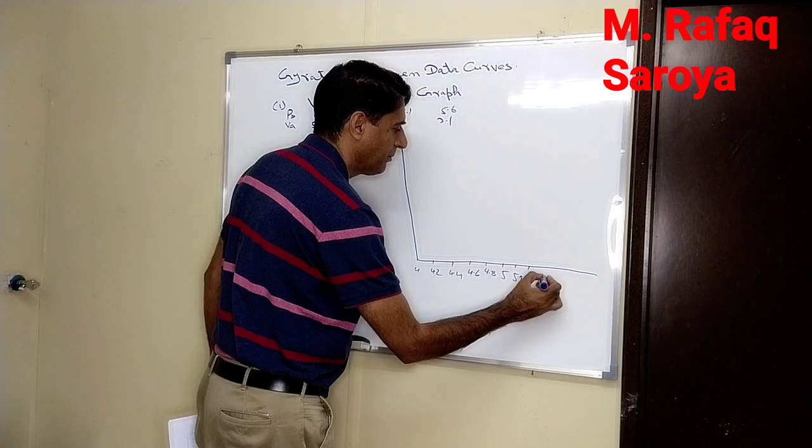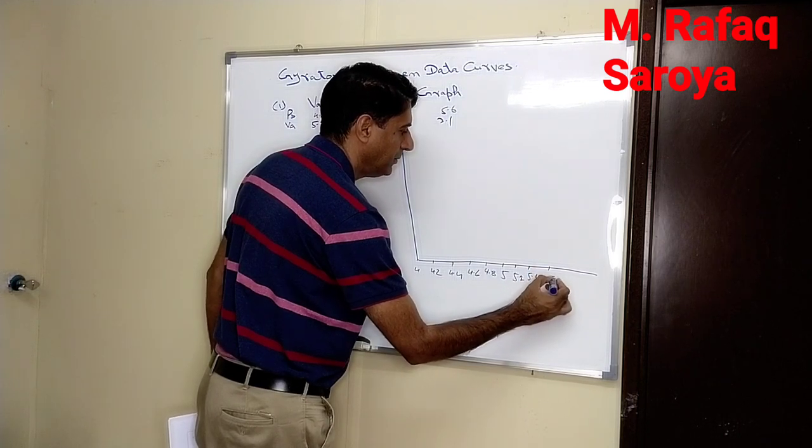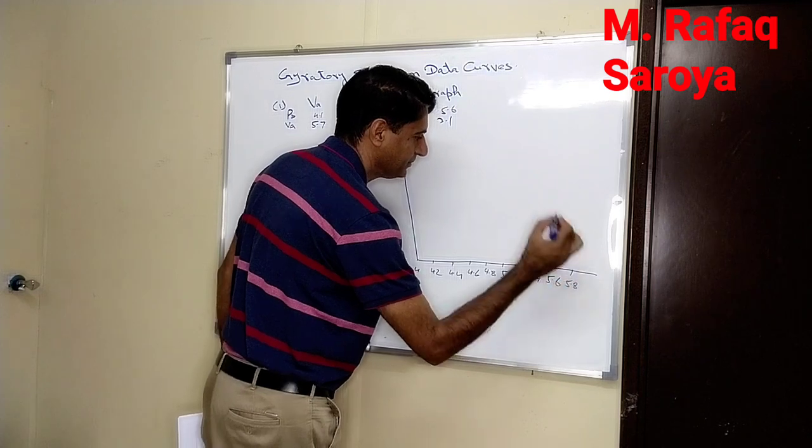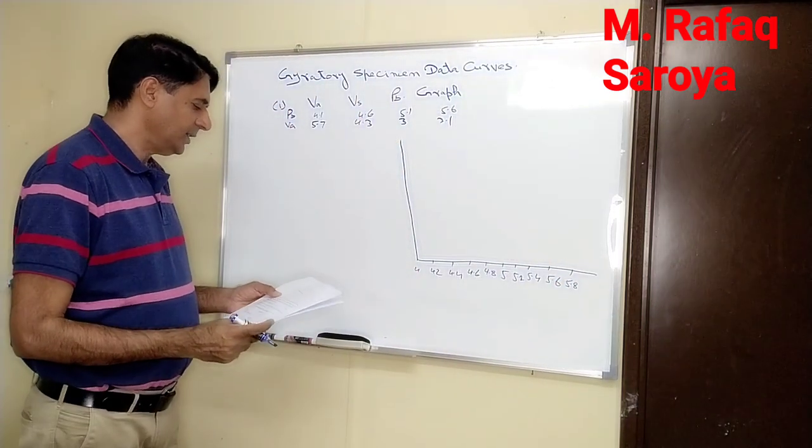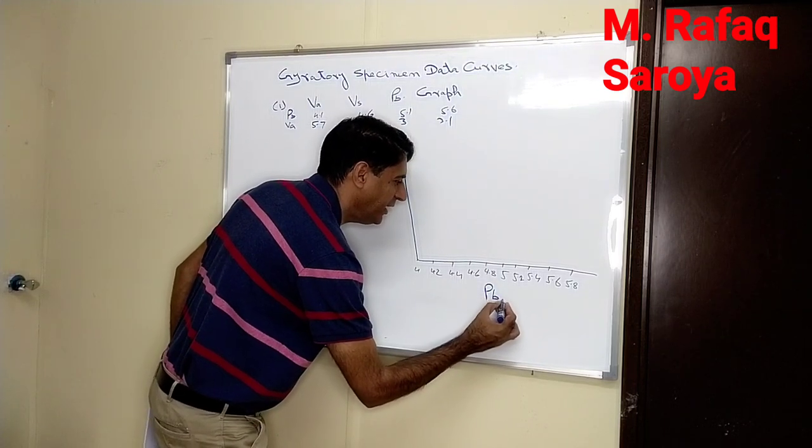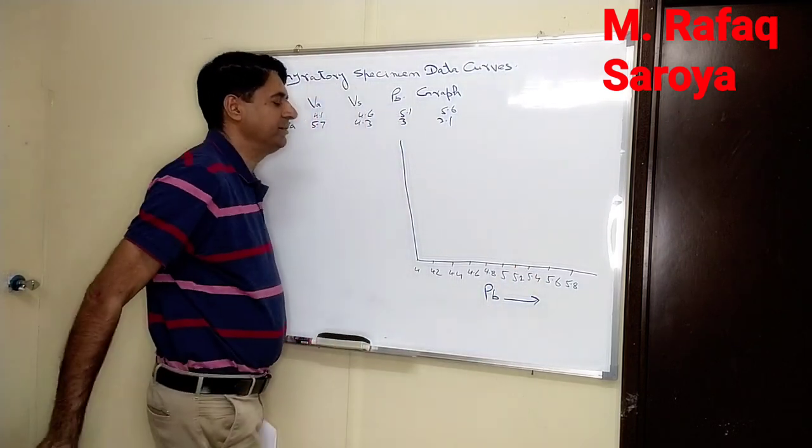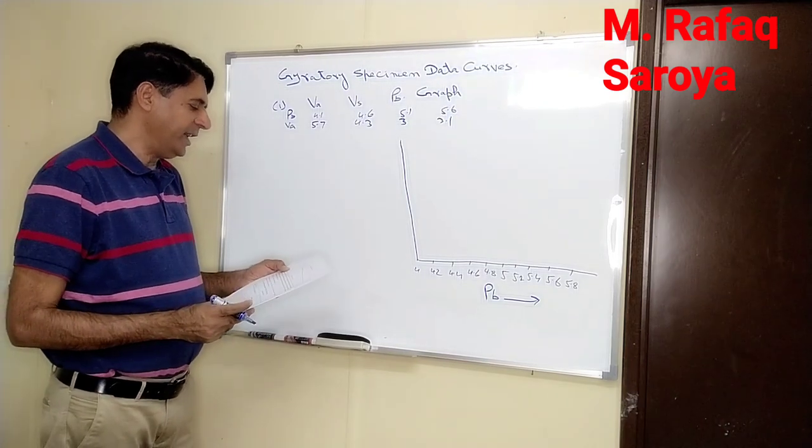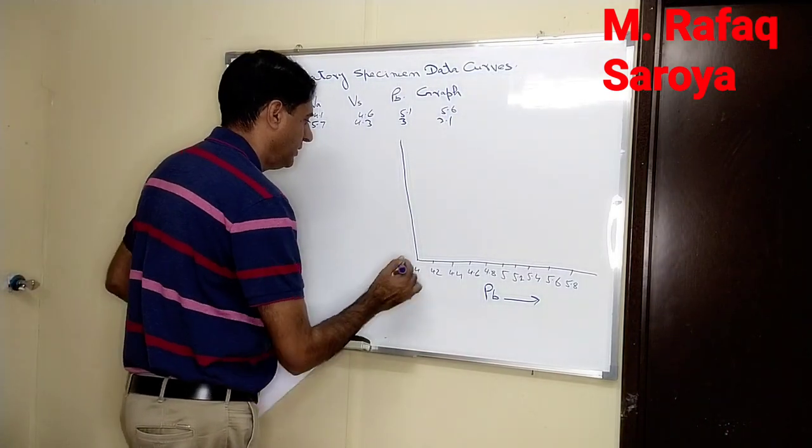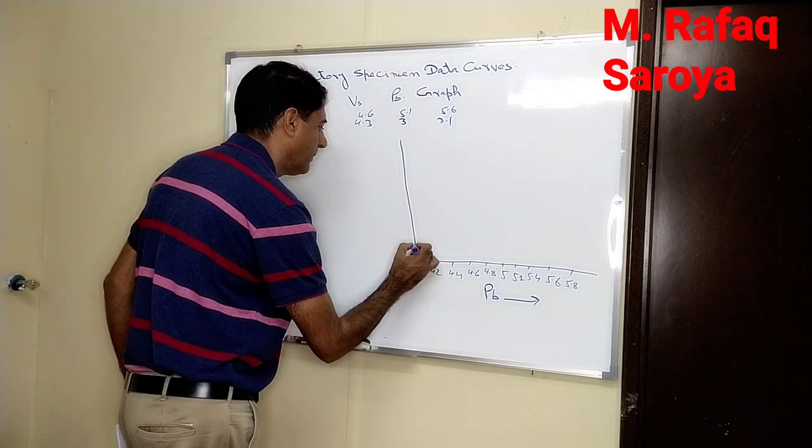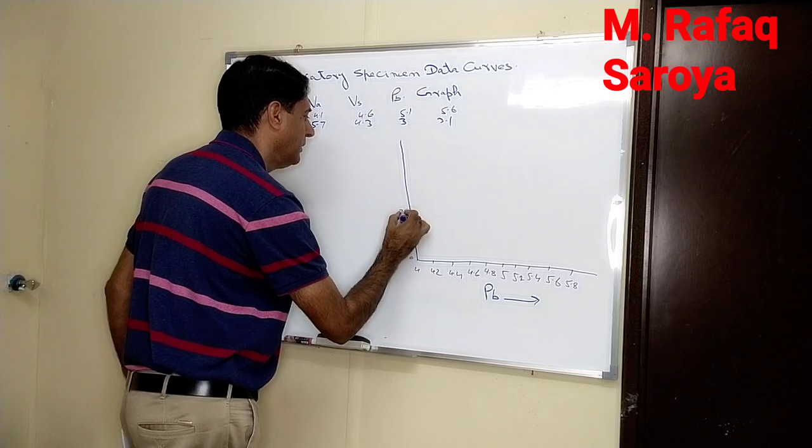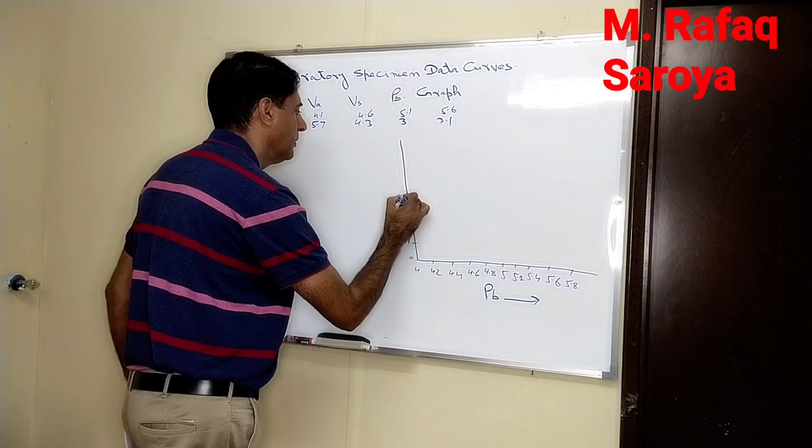At the last I will find the point location. This is the value of our binder content PB being increased to the right-hand side. Similarly, the air voids: 0, 1, 2, 3, 4, 5, 6, and 7.